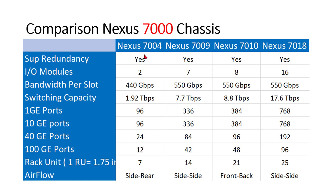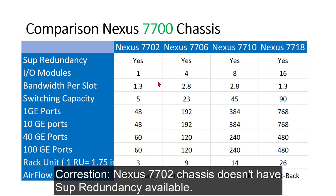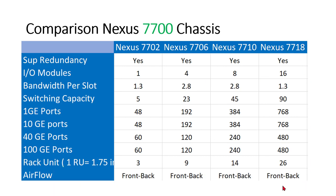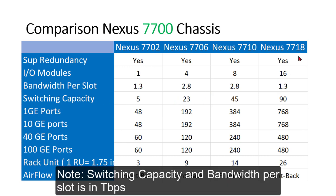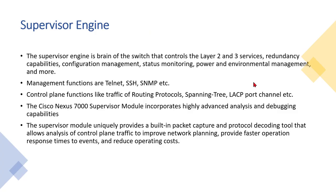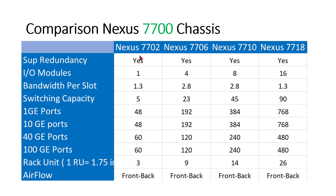For 100GE ports, one module has 6 × 100GE ports, so for the 7004 the maximum is 12 × 100GE. Rack units indicate the physical height — 1 RU equals 1.75 inches, so you can multiply by that to get the height; the 7018 is very large. Airflow for most models is side-to-rear or front-to-back. The 7718 has a switching capacity of 90 Tbps, and the 7702 does not have supervisor-level redundancy — noted as a correction to the slide.